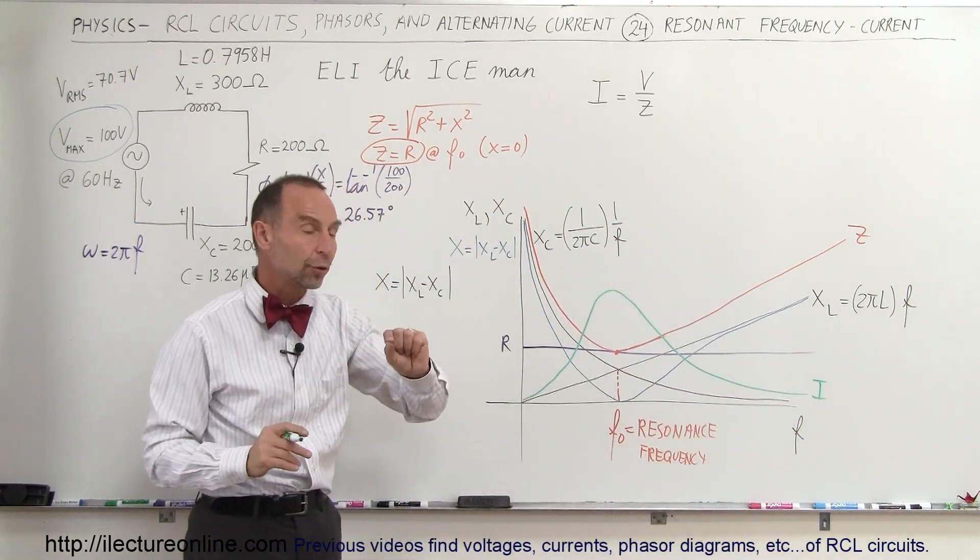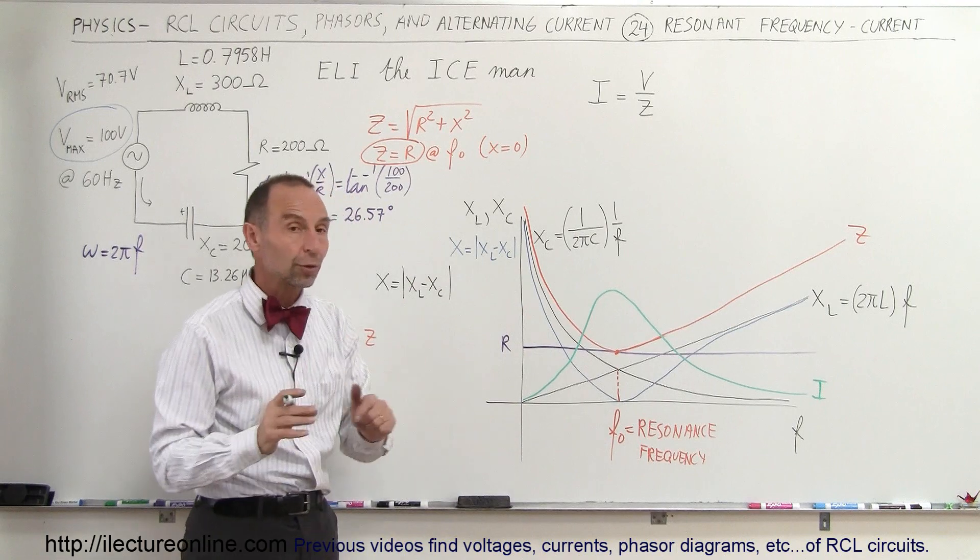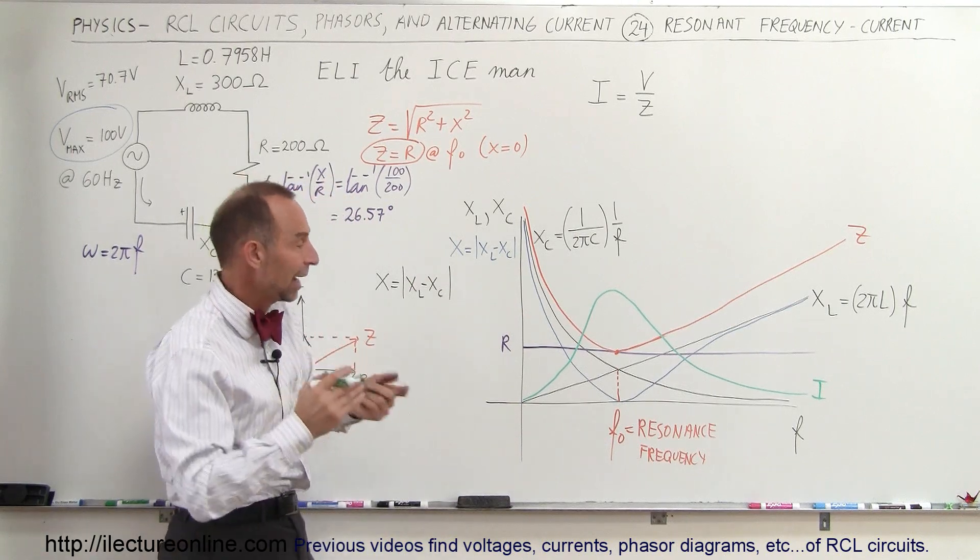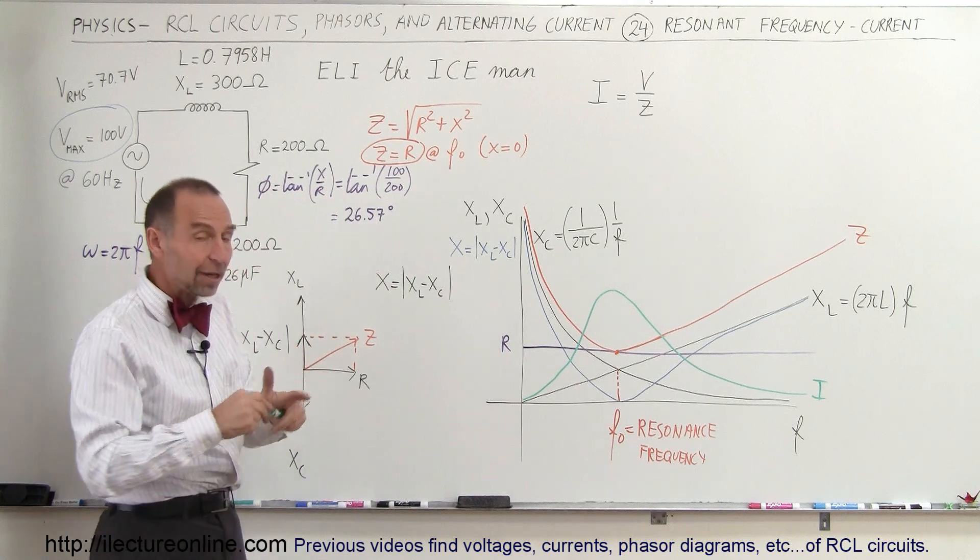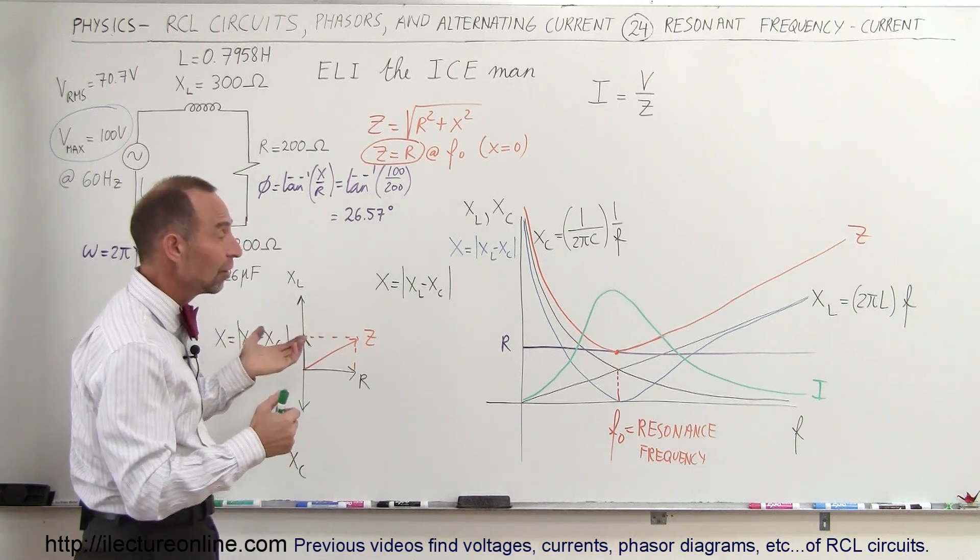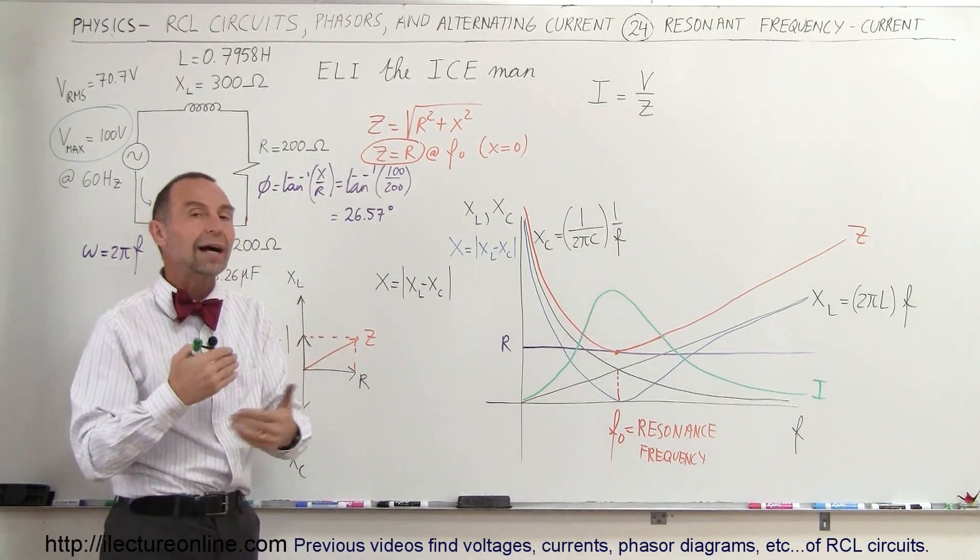At high frequencies we have low current, at low frequencies we have low current, and we have the maximum current or high current when we reach resonance frequency. And this property of RCL circuits does lend itself to all kinds of uses.